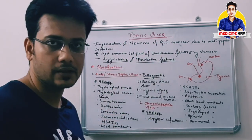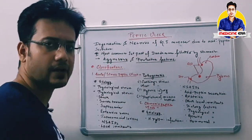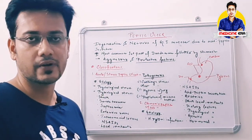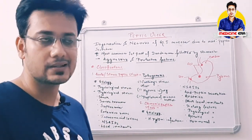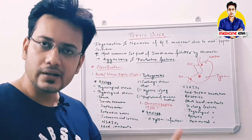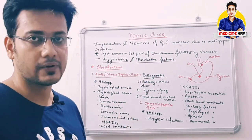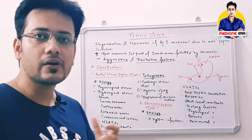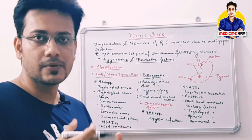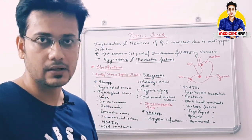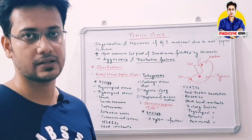The most common site of peptic ulcer is the first part of the duodenum, followed by the stomach. There are two categories of factors: aggressive factors and protective factors. Aggressive factors include pepsin, hydrochloric acid, and chemical irritants like smoking and alcohol. Protective factors include bicarbonate ions and mucus secretion. An imbalance between these two leads to peptic ulcer.